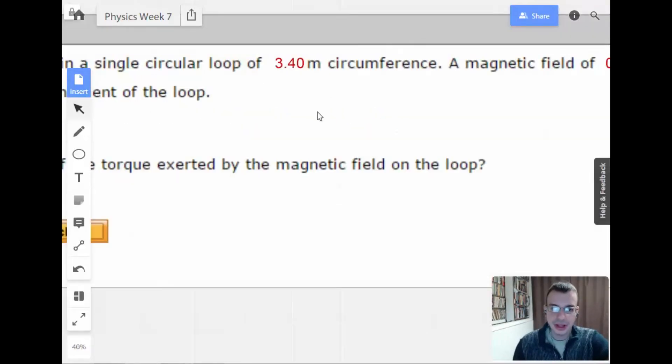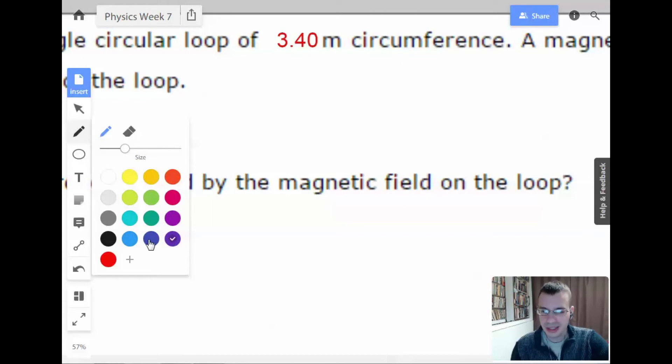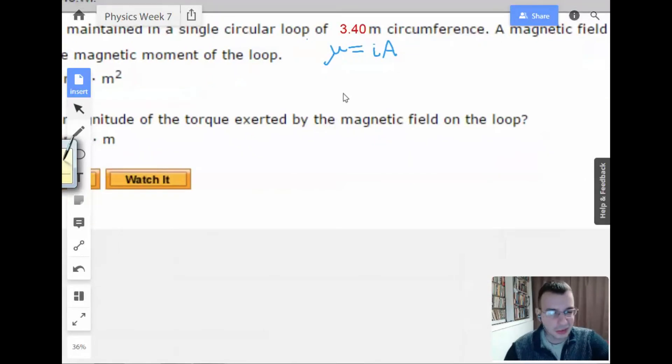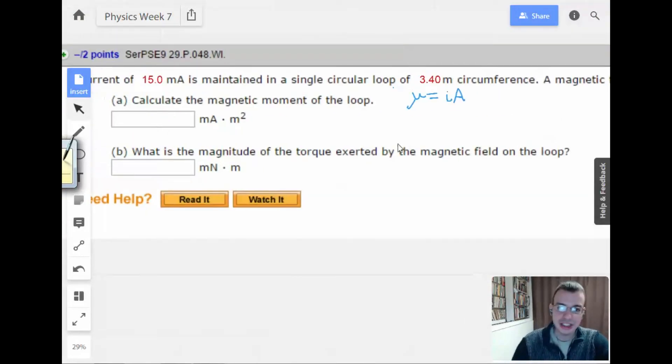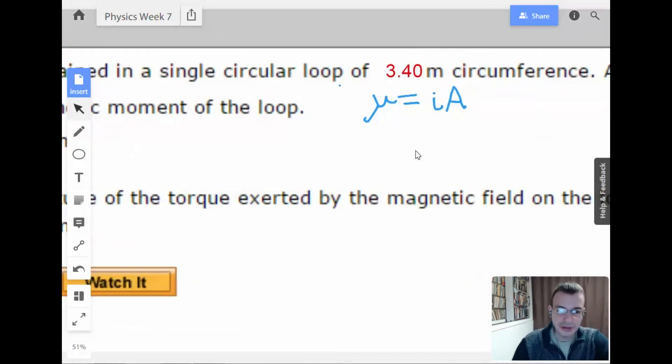Alright, so we're going to write that down. Let's do teal. So magnetic moment of a loop equals current times area. Alright, so for magnetic moments, I would minimize actual thinking about this and just get reasonably familiar with how you can use the formulas. I assume you'll be given a formula sheet and if not, memorize this.